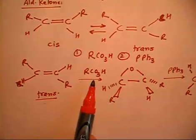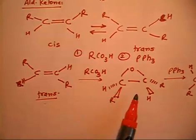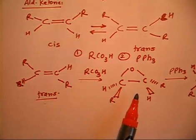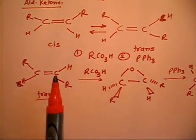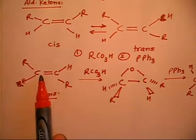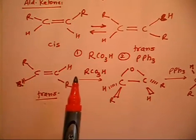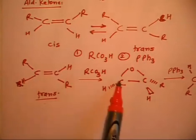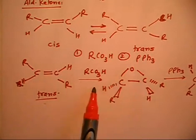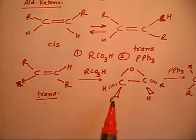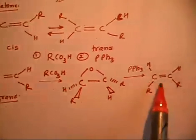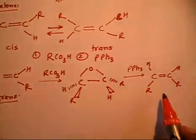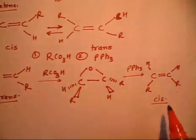When you treat with RCO3H, you first get an epoxide. In this three-membered ring, when attack occurs from one side, one hydrogen goes inside and one R goes to the top side — because in a three-membered ring, one group always goes inside and another goes to the top. When you then treat with PPh3, you get the cis-alkene product.